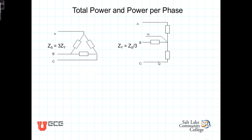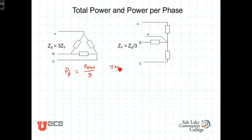Whether it's a delta connected load or a Y connected load, most of our calculations are done on a per phase basis. Therefore it's necessary to take that total power and come up with a per phase power. We're going to call the per phase power P sub φ (phi). That's the per phase power, equal to the total power divided by three. So for example, if we had a 15 horsepower motor, each phase would produce five horsepower — that 15 horsepower would be distributed across the three phases evenly.